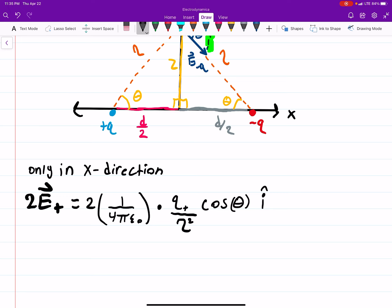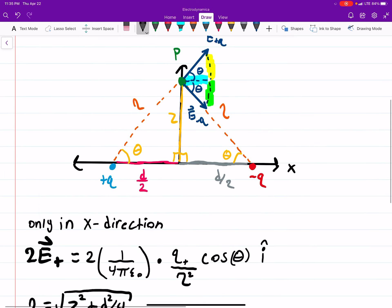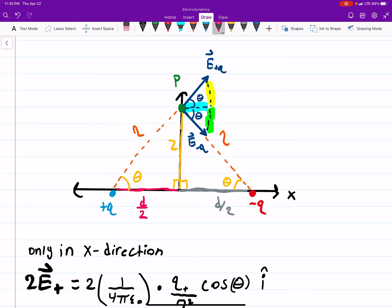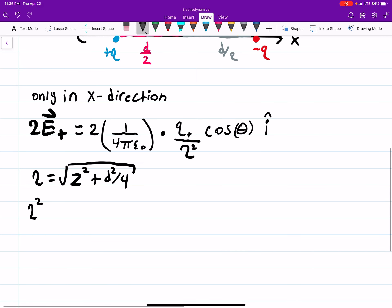So for example, script R. Well, that's pretty easy because we have a right triangle. So we can say script R squared is the square root of z squared plus d squared over 4. So just the right triangle, you can look at this left-hand side. This side squared plus this side squared is that script R squared. And if we square both sides, then the square root just goes away. So that's that part.